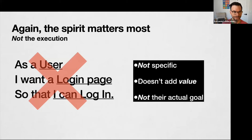For example, 'as a user, I want a login page so that I could log in' is not a good user story. It's not specific about what kind of user it applies to. The feature isn't something that actually adds value, nor does the story explain what the user is really trying to do. If you're just going to write Agile stories this way and say you're doing Agile the way it's meant to be done, that's really not the best approach.